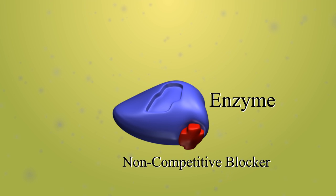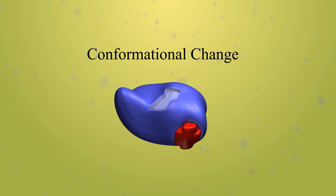Noncompetitive enzyme inhibition involves the binding of a blocker to the enzyme away from the active site. This binding causes a conformational change in the enzyme, altering the shape of the active site.